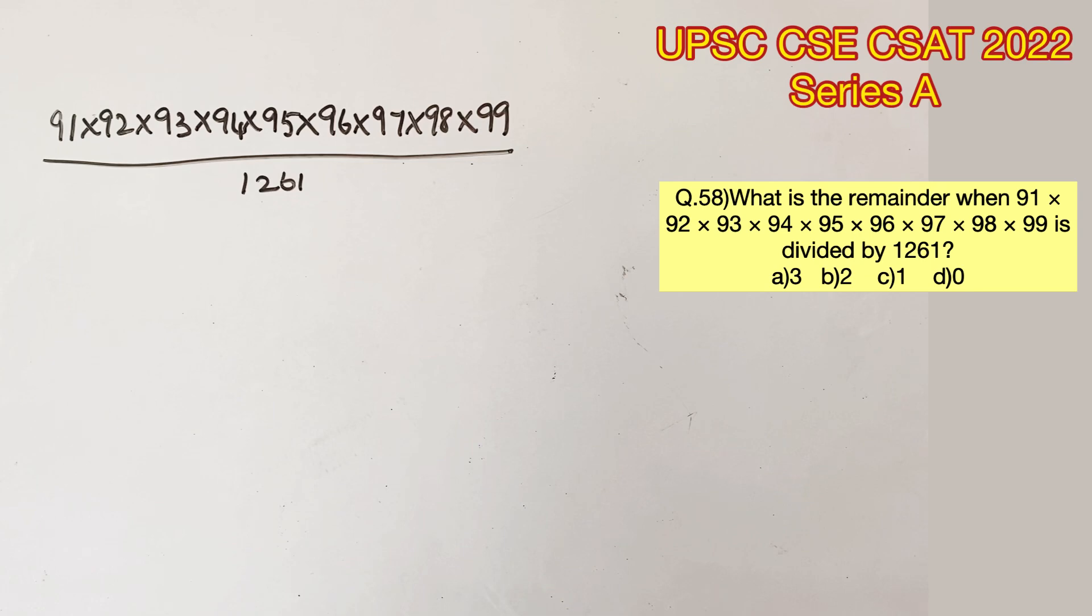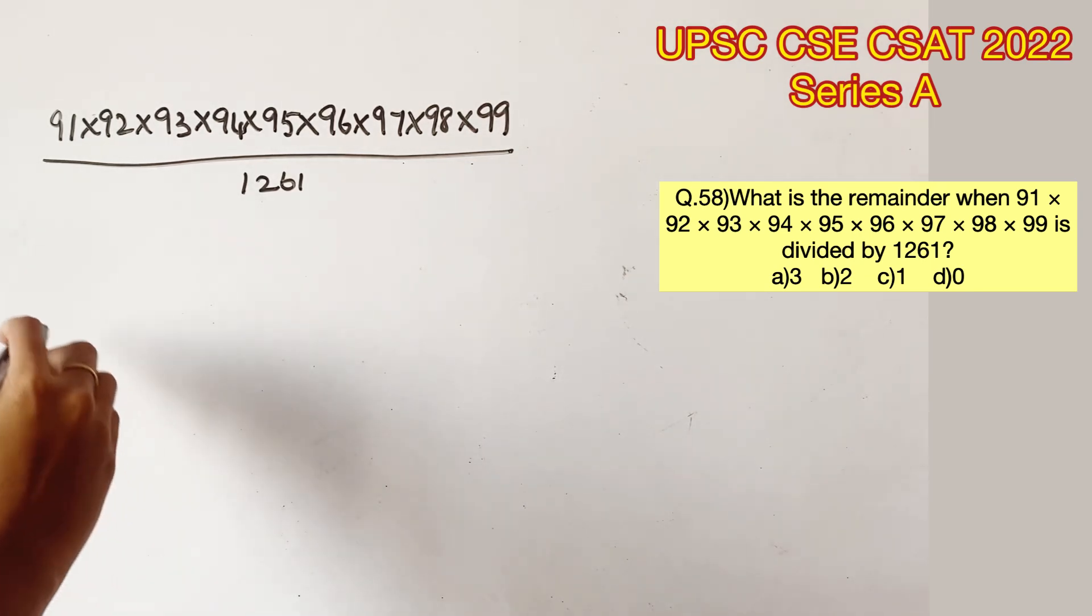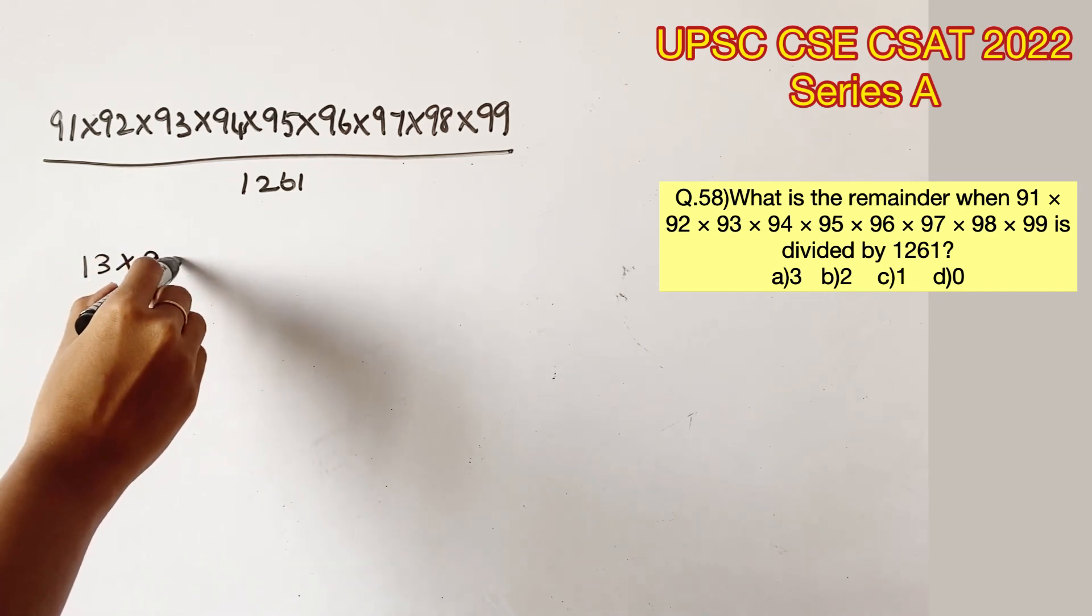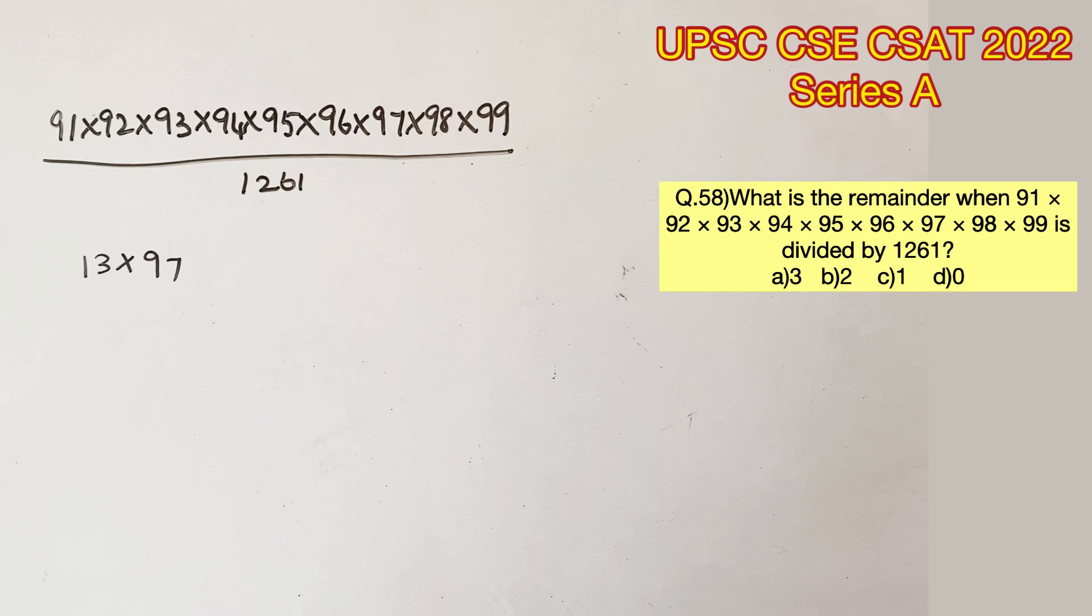So let's try and simplify this number as much as possible. If you can solve it just by looking, well and good. It's actually 97 into 13 will give you 1261. But most of us won't be remembering 97 tables or be able to solve it right away.